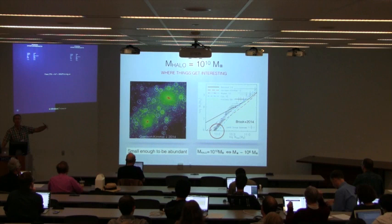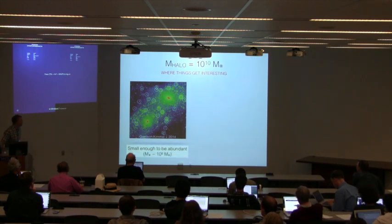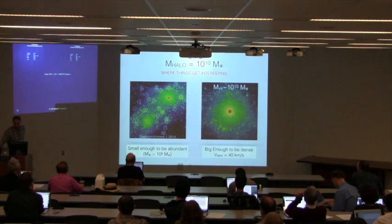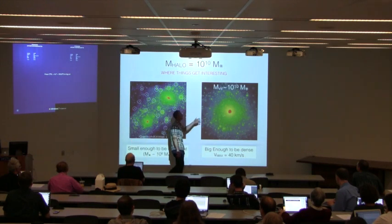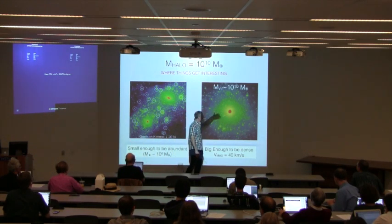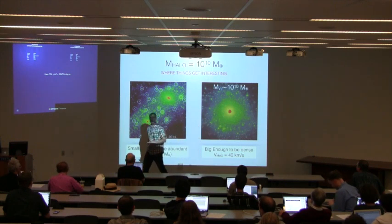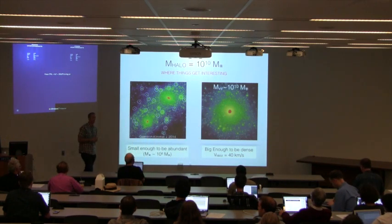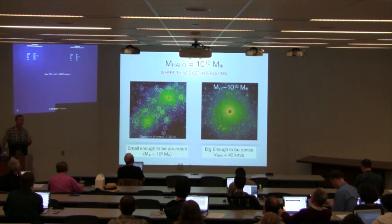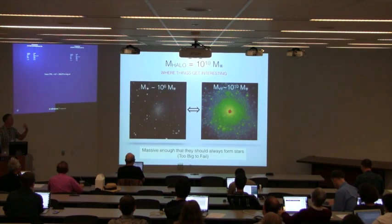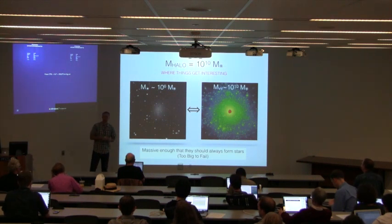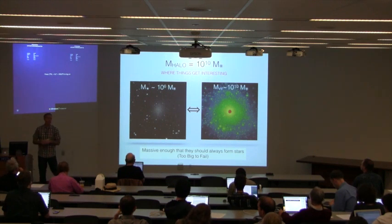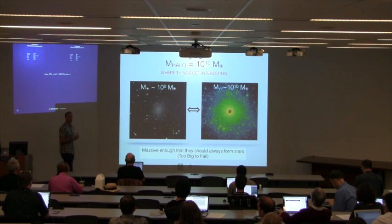These halos are massive enough to be dense. A zoom-in on an individual halo of mass 10^10 solar masses shows these objects have circular velocities of about 40 kilometers per second — a pretty deep potential well, well above the scale where you think reionization matters. In that sense, they're big enough that they pretty much always ought to form a galaxy. These are the objects that are too big to fail — there's no good reason why they shouldn't be forming stars.